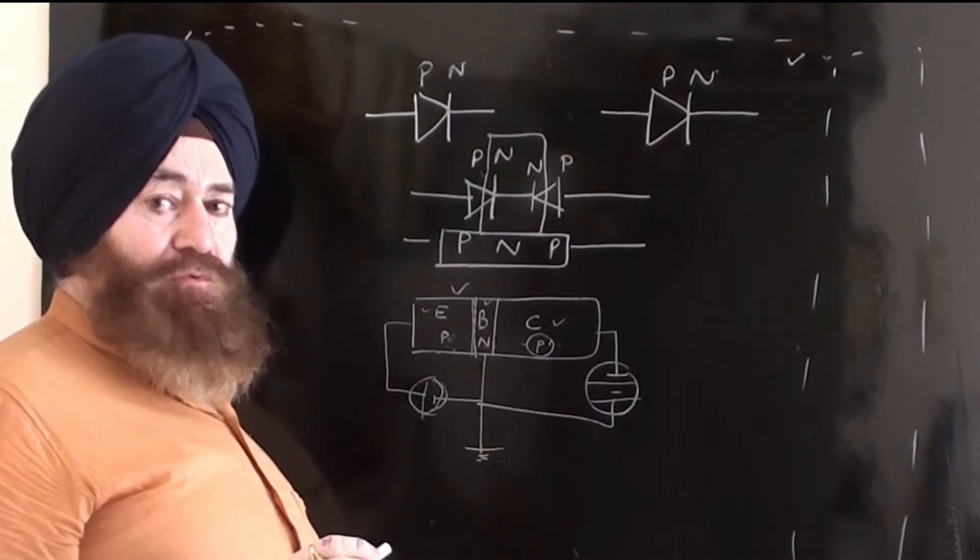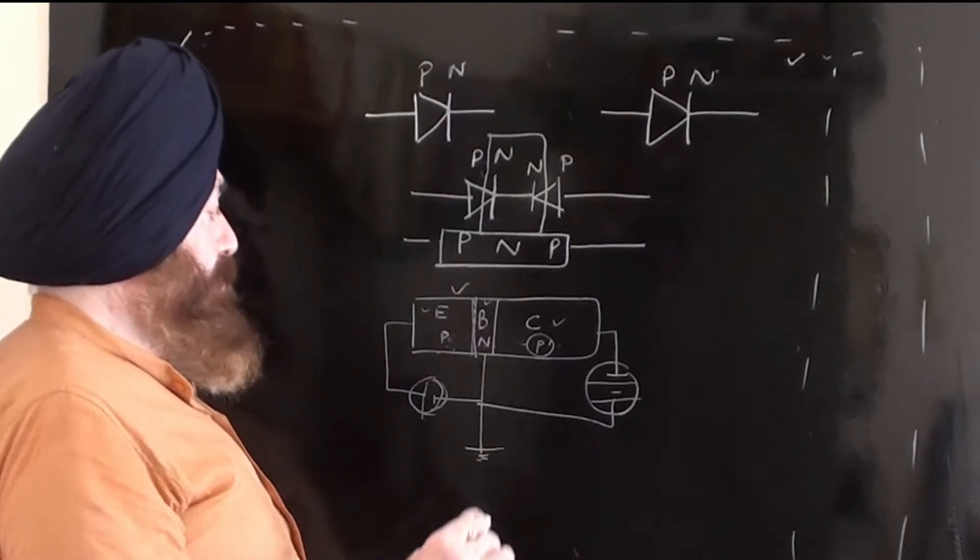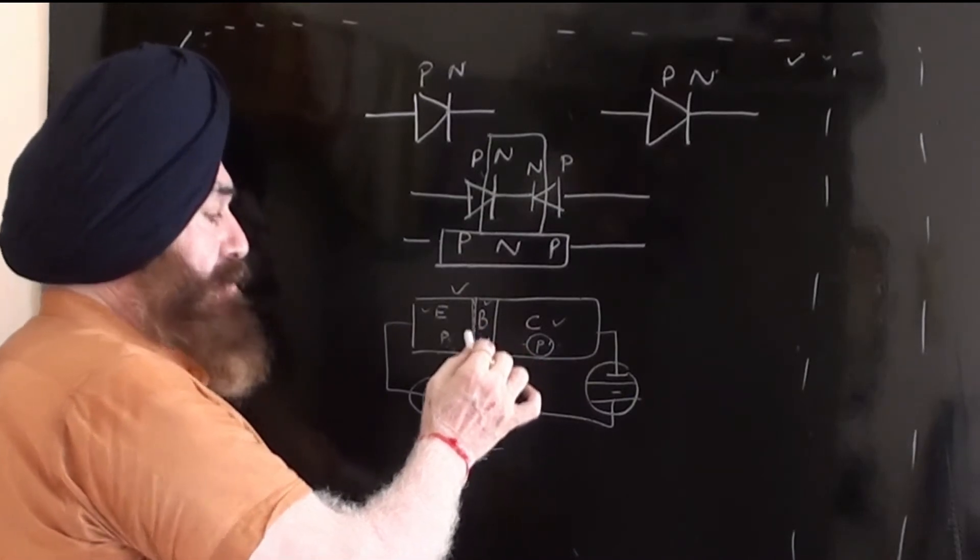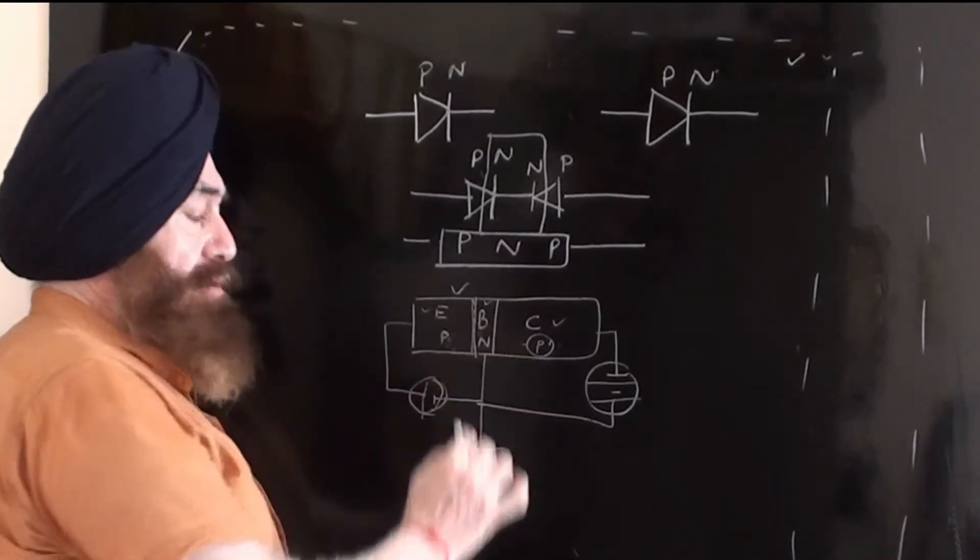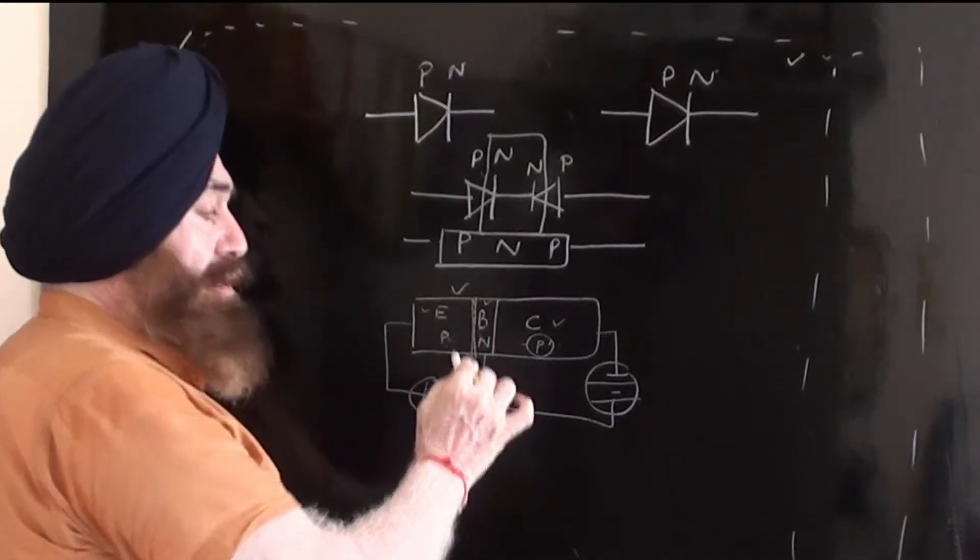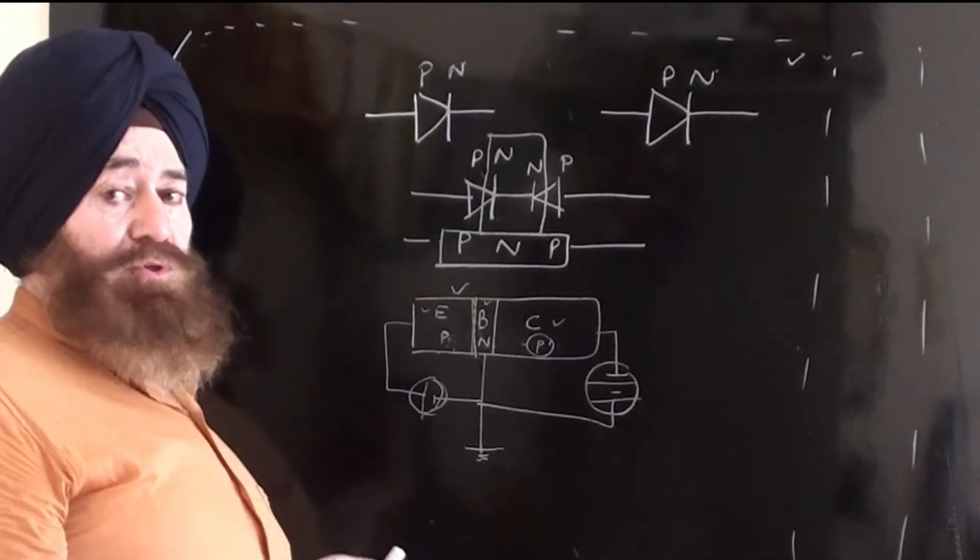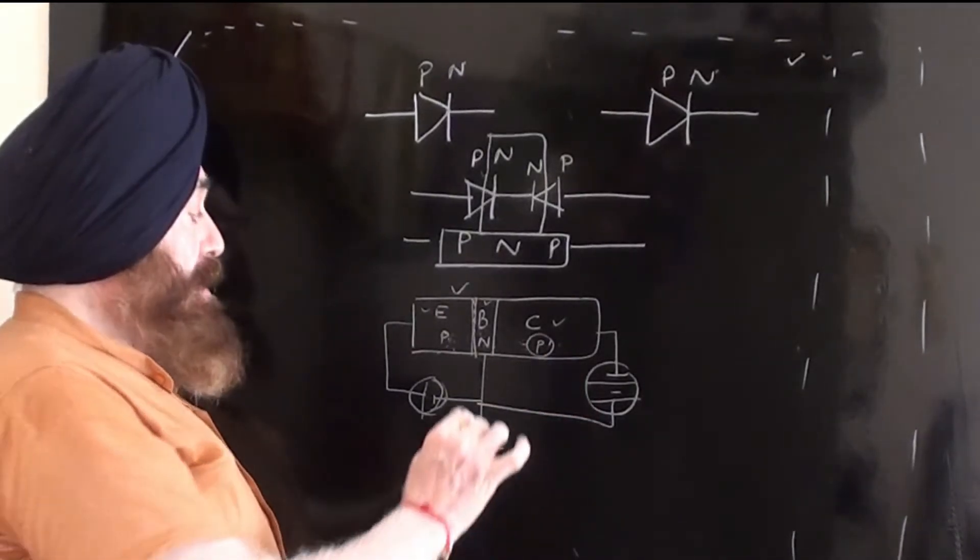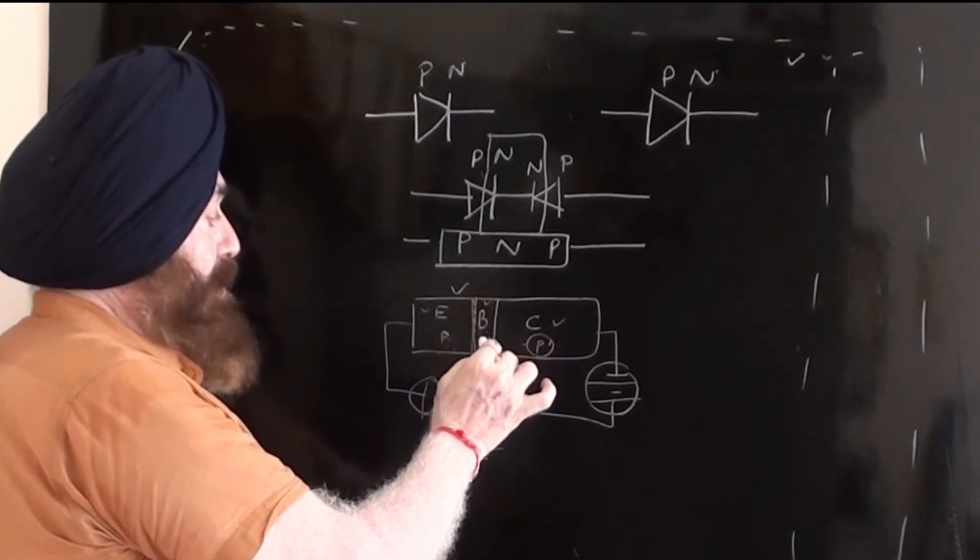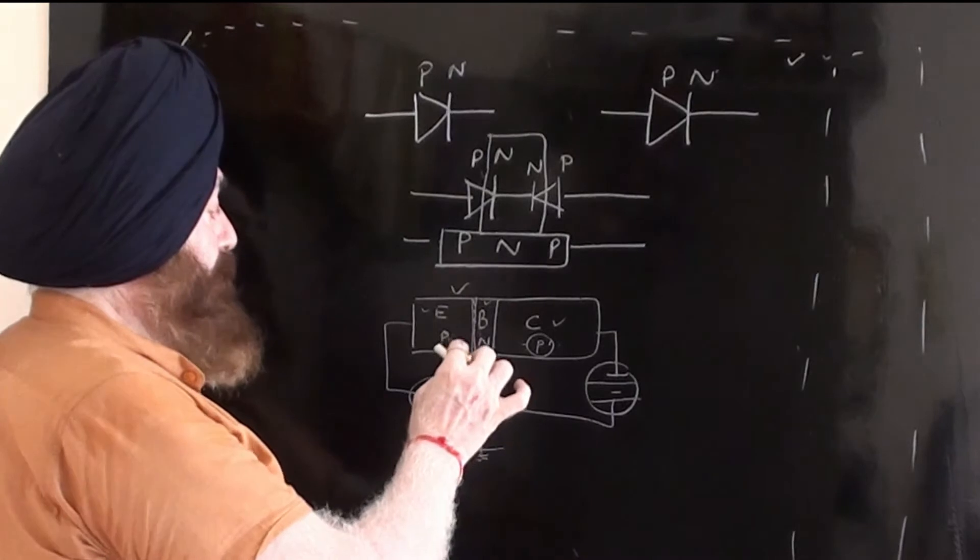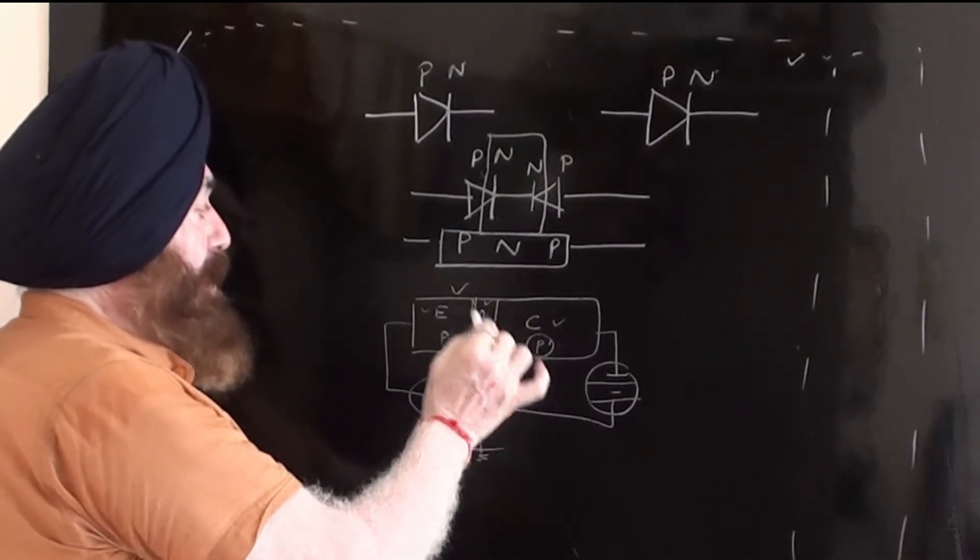But what we want? We want a very less recombination here. We want whatever the emitter current, almost the same should be the collector current, and it can happen only if the base is very thin. If here the doping is very very thin, we are having very thin doped base region.